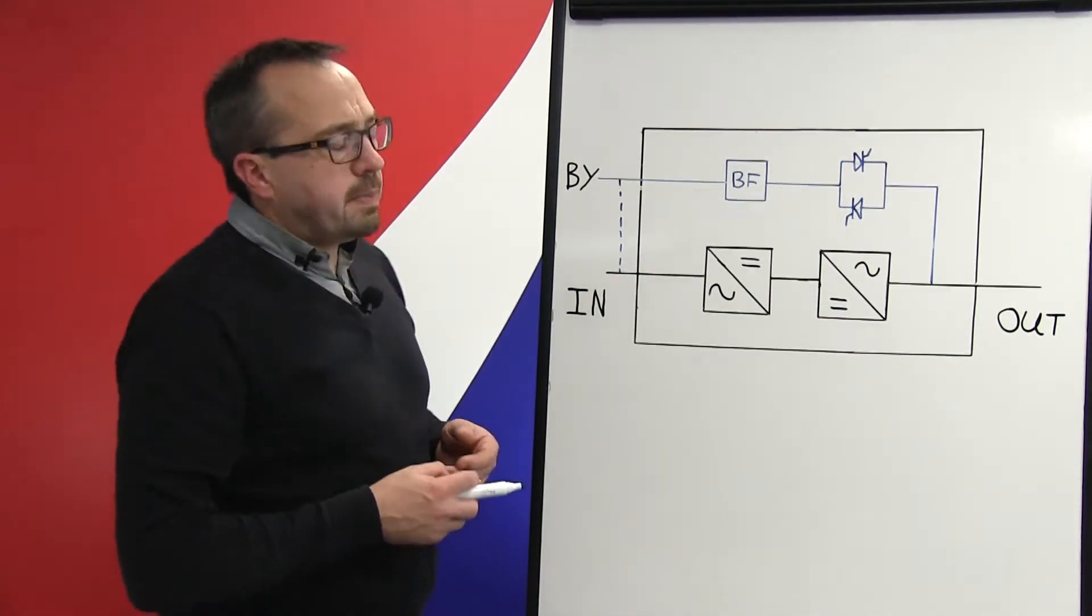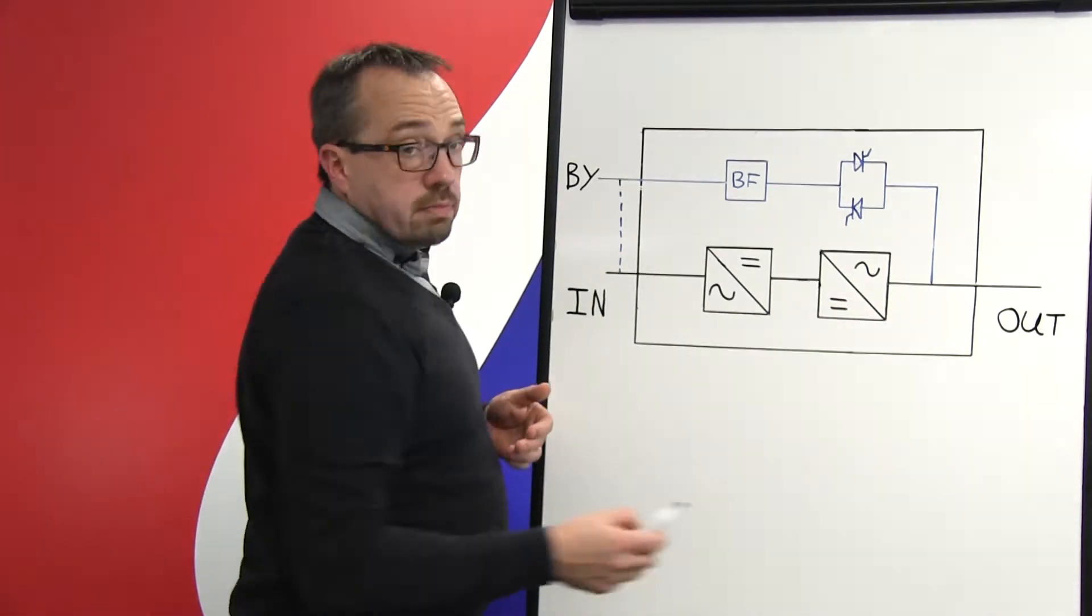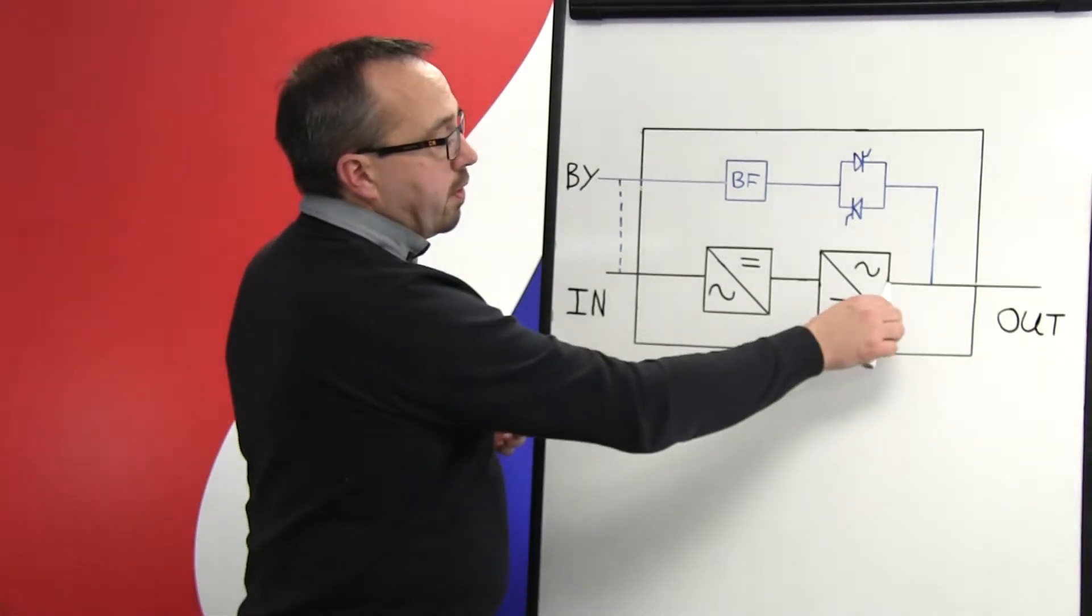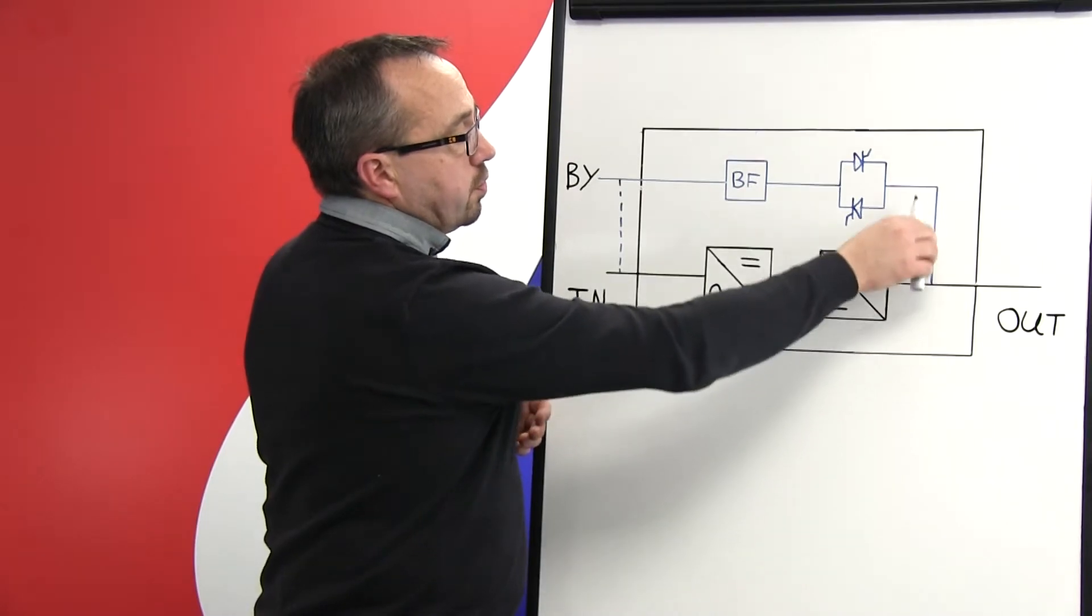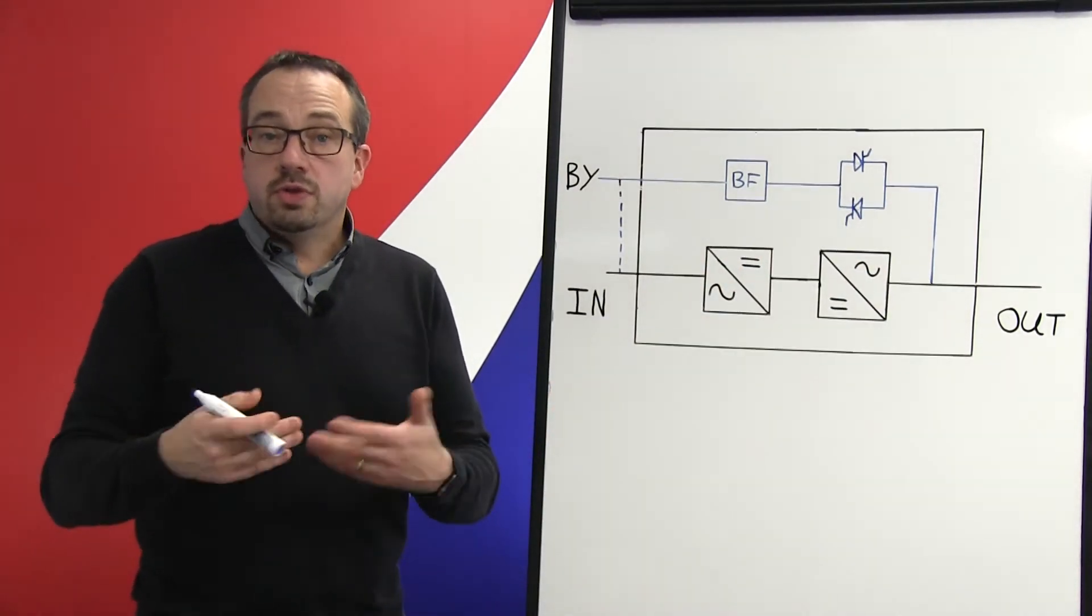Now the purpose of the actual static bypass itself is to transfer the load seamlessly, that is with no break, from the output of the inverter onto the bypass line, whether it be automatically or manually, should the need arise.